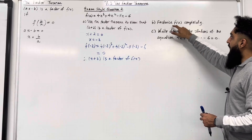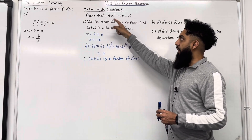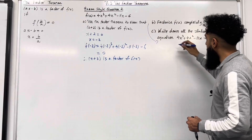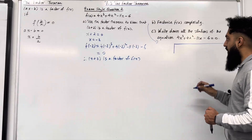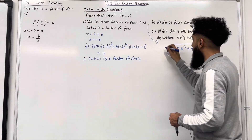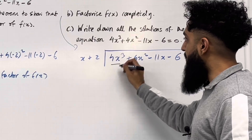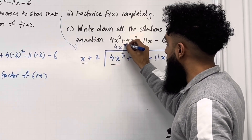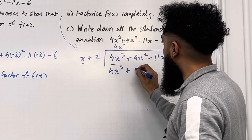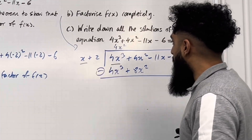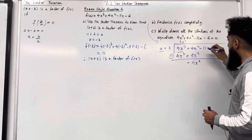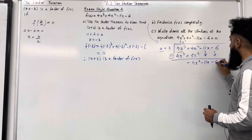Let's move on to Part B: factorise f(x) completely. We know x + 2 is a factor of the cubic, so we use polynomial division to find the quadratic factor. Inside the bus stop is the cubic, and outside is the linear factor x + 2. The first step is to divide 4x³ by x, giving 4x². Expand 4x² with (x + 2): this gives 4x³ + 8x². Subtracting gives 0 and −4x².